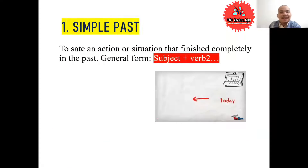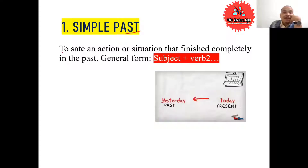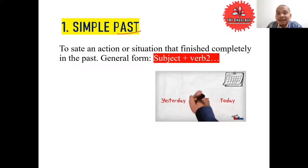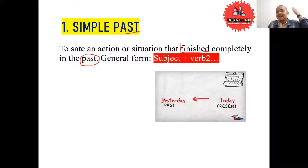Now let's move on to understand simple past. Simple past — when we talk about the past, we talk about a completed action. We use past tense for an action or situation that finished completely in the past. Something that happened or was completed in the past, not now.